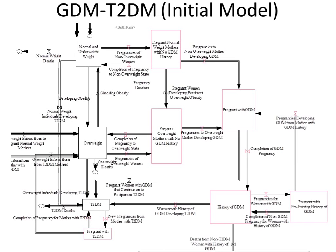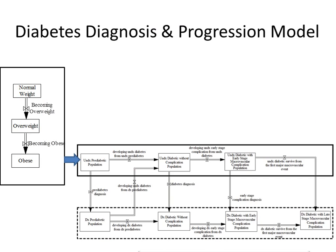Within a system dynamics model, we have this way graphically of showing the model. These stocks represent subgroups of the population, and the flows represent transitions between those groups. People will flow over time from one health state to another — gaining weight, losing weight, for example. We can draw out quite large models often in fairly understandable fashions.